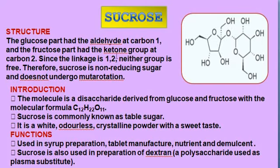Commercially, sucrose is obtained from sugar cane or sugar beet, and is also present in various concentrations in most fruits. Upon hydrolysis, sucrose gives one molecule each of D-glucose and D-fructose. It is important to note that sucrose has an alpha-D-glucopyranose ring attached through its C1 to C2 of beta-D-fructofuranose. Its functions include use in syrup preparation, tablet manufacture, and the preparation of dextran, a polysaccharide used as a plasma substitute.